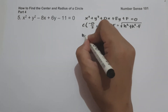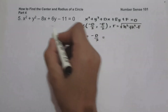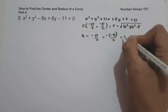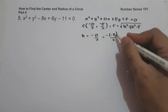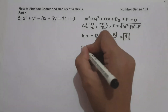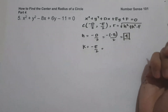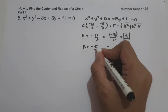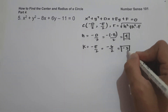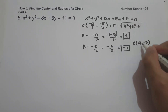To find the value of h, we use negative d over 2. The value of d is negative 8, so this is negative times negative 8 over 2. Negative times negative 8 is positive 8 divided by 2, and that is 4. For the value of k, that is negative e over 2. The value of e is 6, so this is negative 6 divided by 2, which is negative 3. Therefore, our center is (4, negative 3).